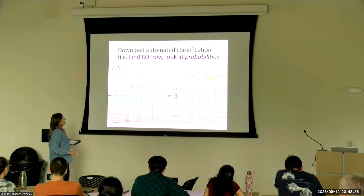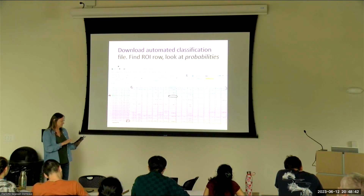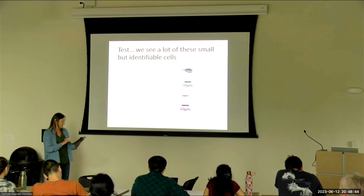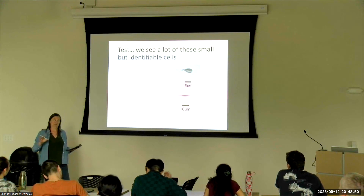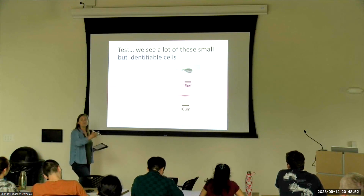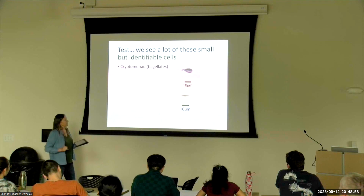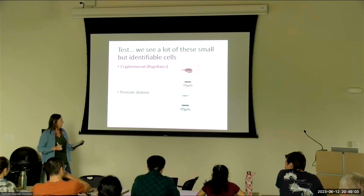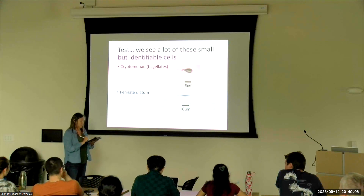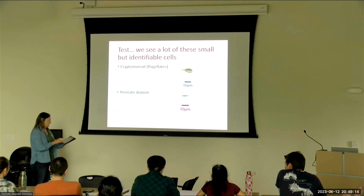Across the top are all the taxonomic groups it can classify, and the values are probabilities that the image belongs to that classification. The numbers are really small except when they're not — sometimes one group has an unambiguous probability. It's interesting to look at the automated classification and ask why there are a couple of groups it seems associated with, then go look at them and realize they look the same. If you can't tell them apart under a microscope, the classifier can't do magic either. A little tapered shape might be a cryptomonad, and a long thin thing is likely a pennate diatom.